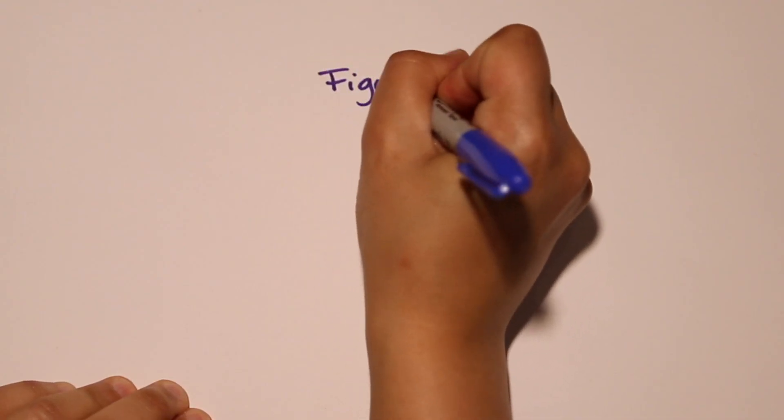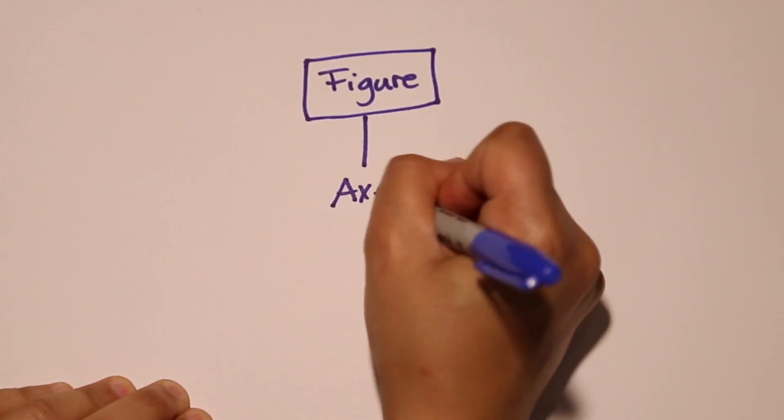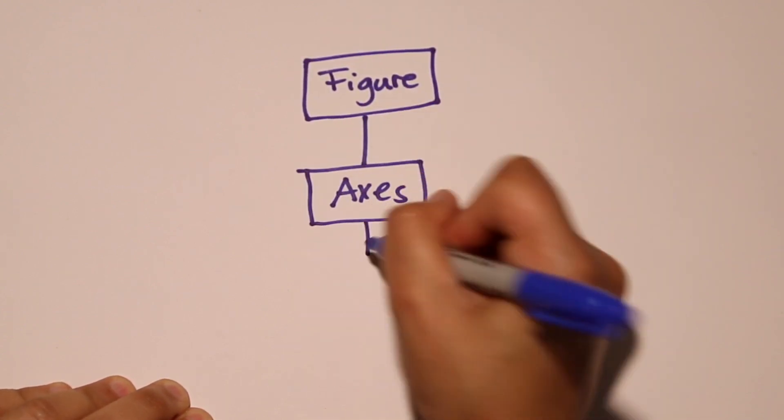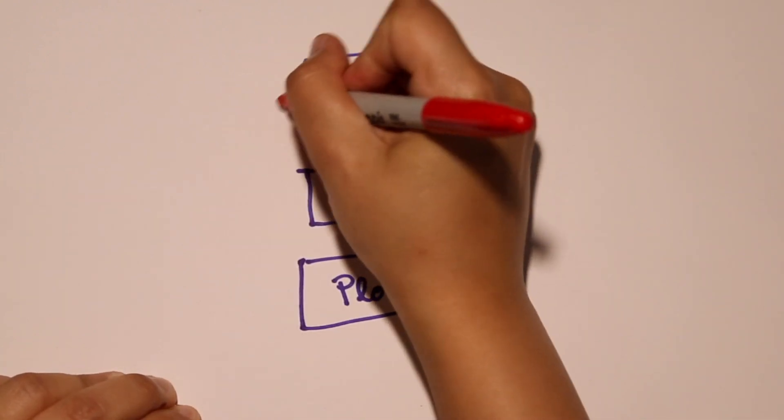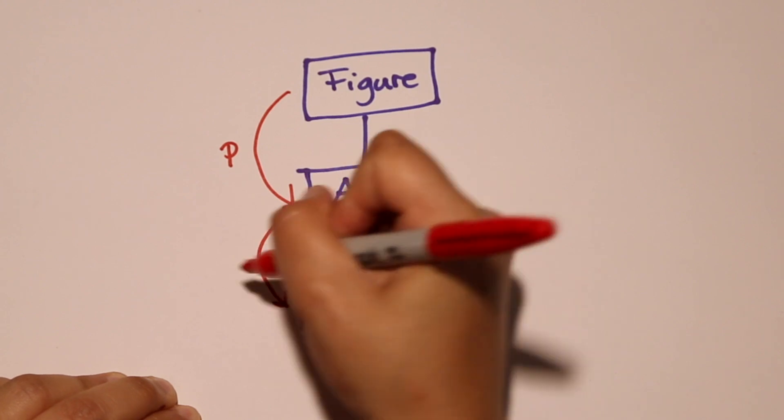In this case, you have the figure window in the top of the hierarchy, the axis object in the hierarchy below, and the plot object again in a lower hierarchy. That makes the figure object the parent of the axis object, and the axis object the parent of the plot object.